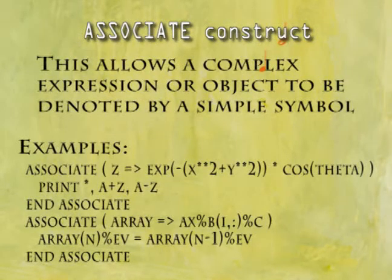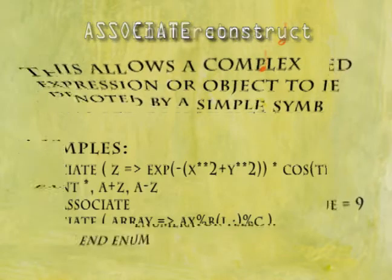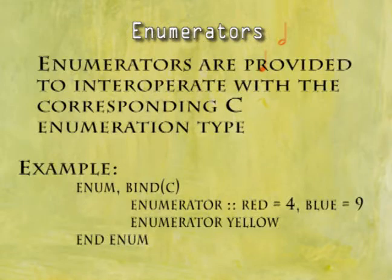The associate construct allows a complex expression or object to be denoted by a simple symbol. Enumerators are provided to interoperate with the corresponding C enumeration type.